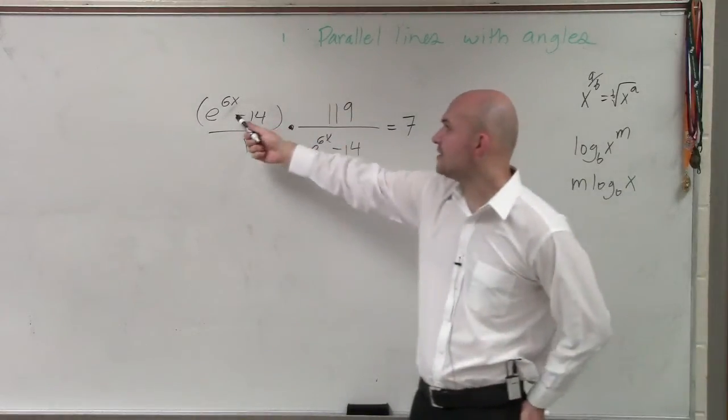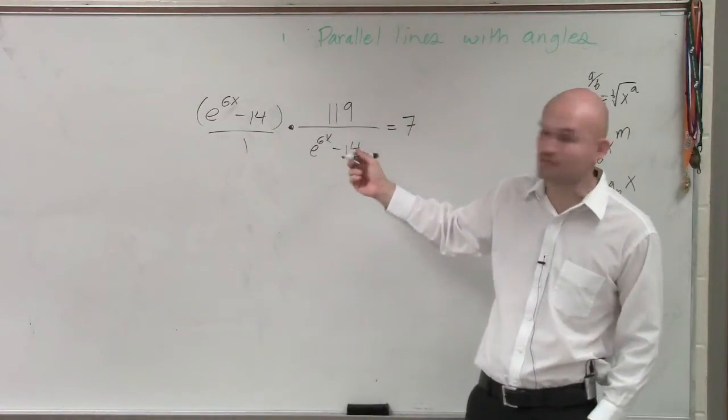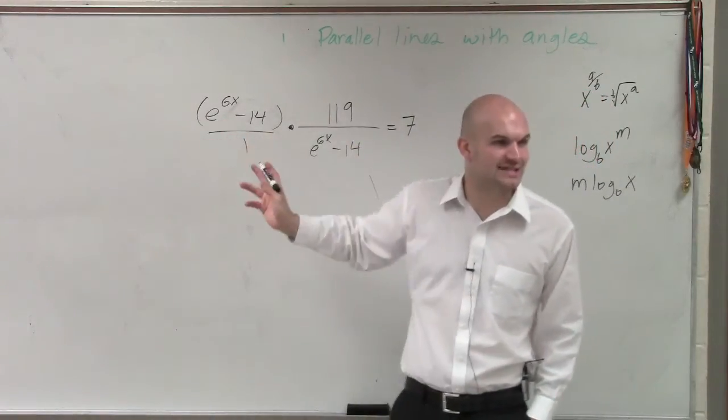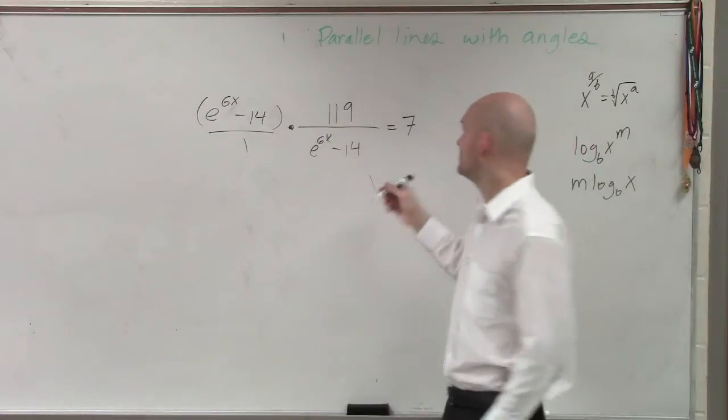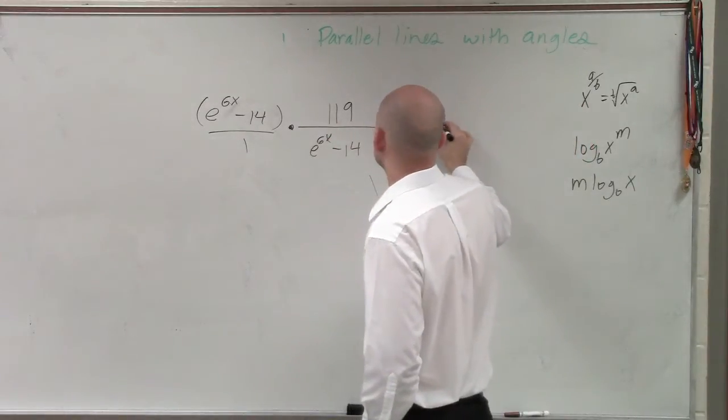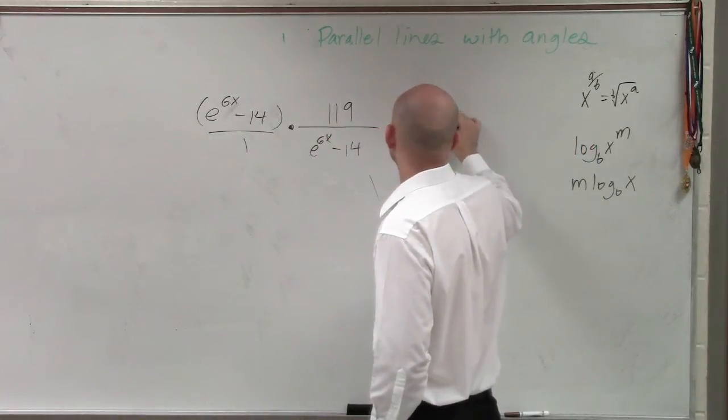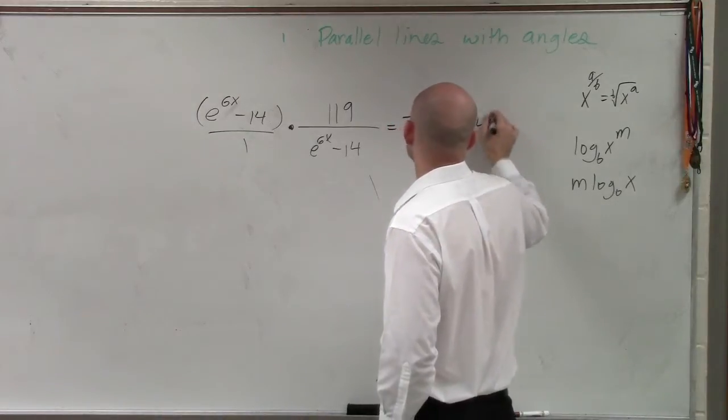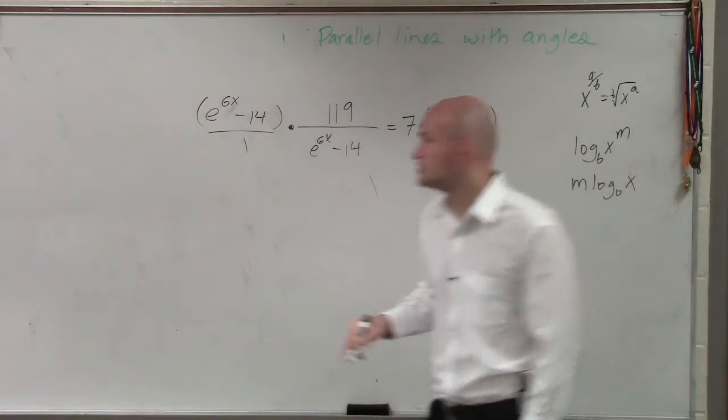Because then, now you have e to the 6x minus 14 over e to the 6x minus 14. Now they divide to 1, right? But then you have that over here. Watch out. Because whatever you do on one side, you have to do on the other. So these divide to 1.